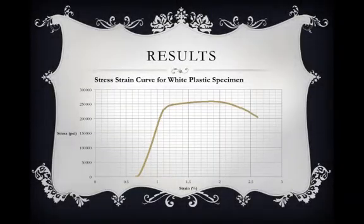The stress-strain curve for the white plastic specimen is somewhat incorrect in that it does not start at 0% strain. This is due to slack in the machine at the beginning of testing. However, the curve still holds true to the characteristics of the specimen.